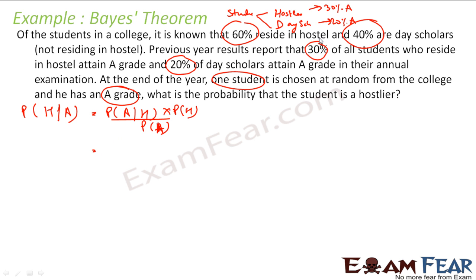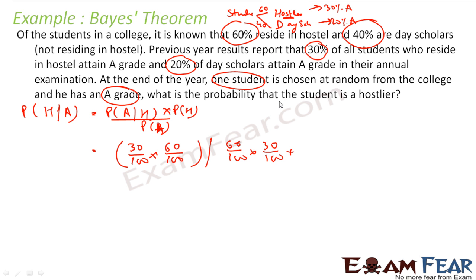Probability of A given Hosteler — Hostelers is the given baseline — is 30% = 30/100. Probability of Hostelers is 60% and Day Scholars is 40%. Into probability of Hostelers = 60%. Divided by P(A): there are two paths — 60/100 × 30/100 + 40/100 × 20/100. Solving this gives 9/30. Very simple — you just applied Bayes theorem and got the answer.